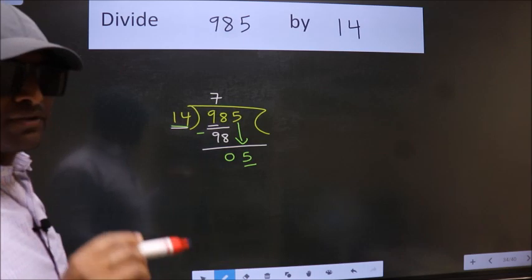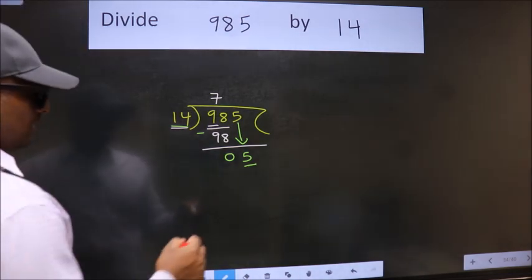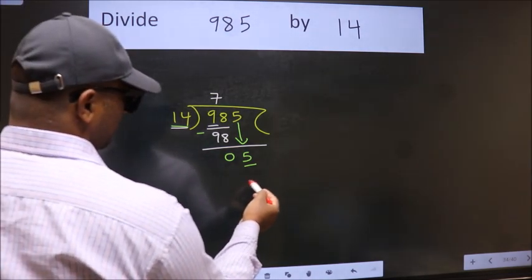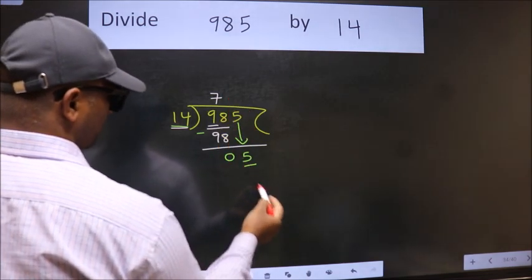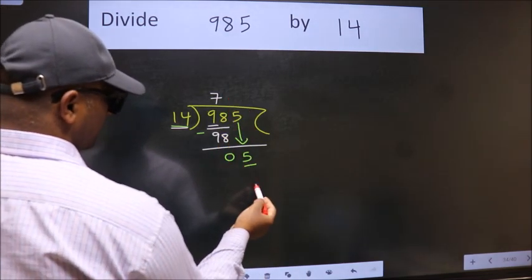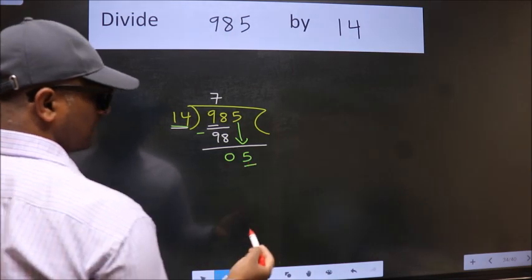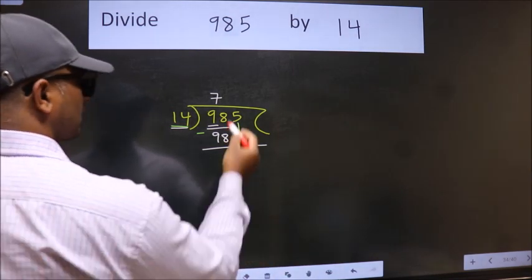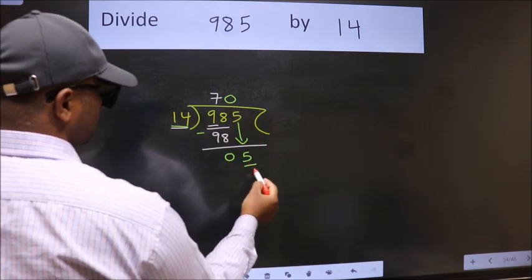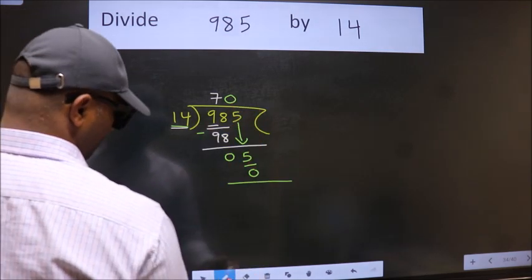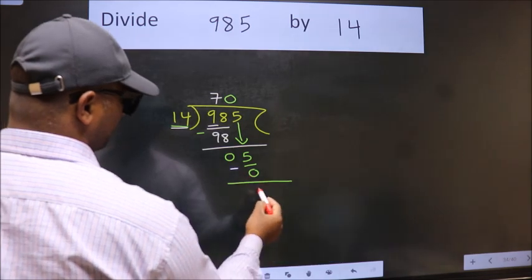Instead of that, what we should think of doing is which number should we take here. If I take 1, we will get 14. But 14 is larger than 5. So what we do is we take 0 here. So 14 into 0, 0. Now we subtract. We get 5.